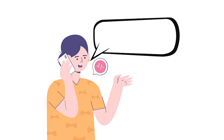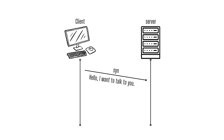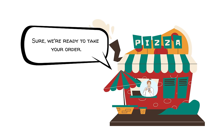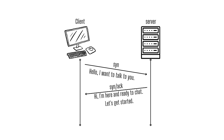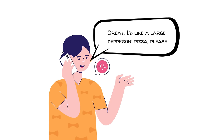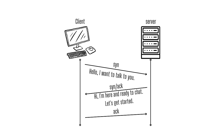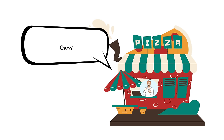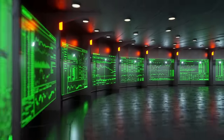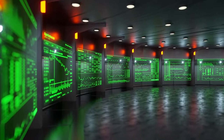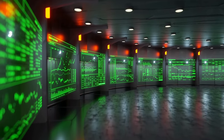Every TCP connection starts with a three-way handshake. Imagine ordering a pizza over the phone: you dial and say you'd like to order — this is like the SYN packet, initiating the connection. The pizza place responds that they're ready to take your order — this is like the SYN-ACK packet, where the server acknowledges and says it's ready. You then confirm your order — this is like the ACK packet, confirming you're ready to proceed. After this three-way handshake, both the client and server know they're ready to start exchanging data, ensuring a smooth and reliable connection before the main data transfer.